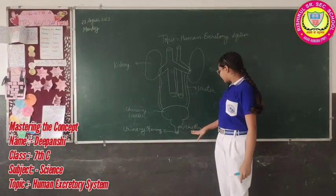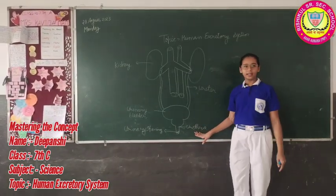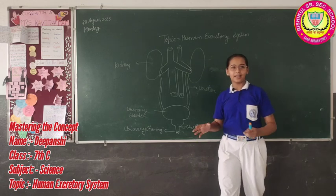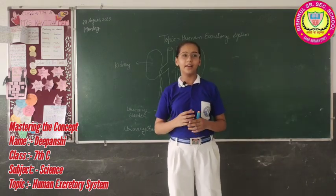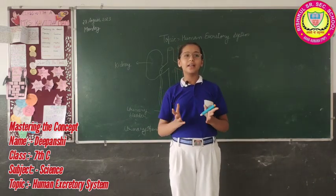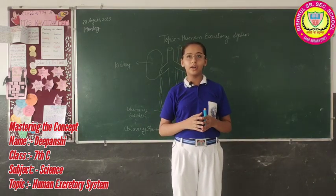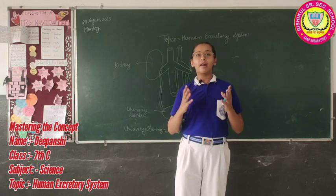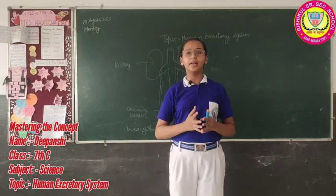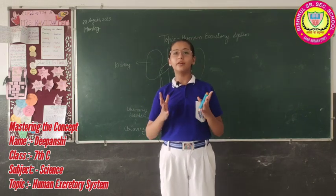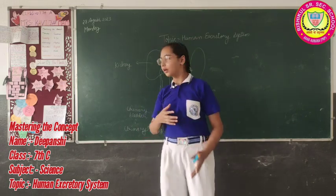Now I discuss about what is the urethra. The urine collected in the bladder is passed out from the body at regular intervals through the opening at the end of a muscular tube.